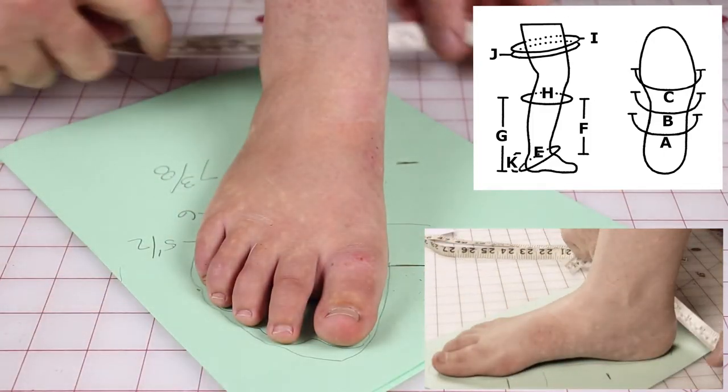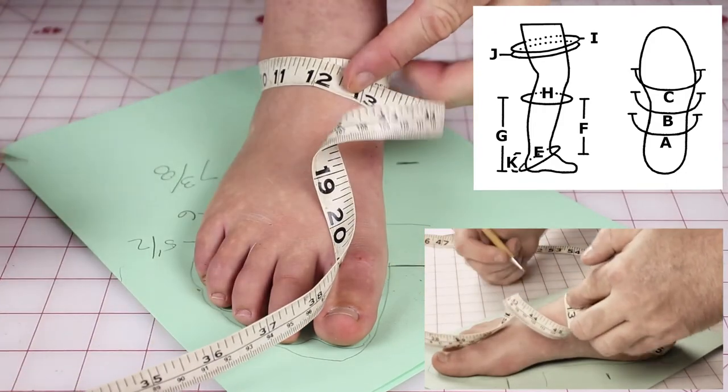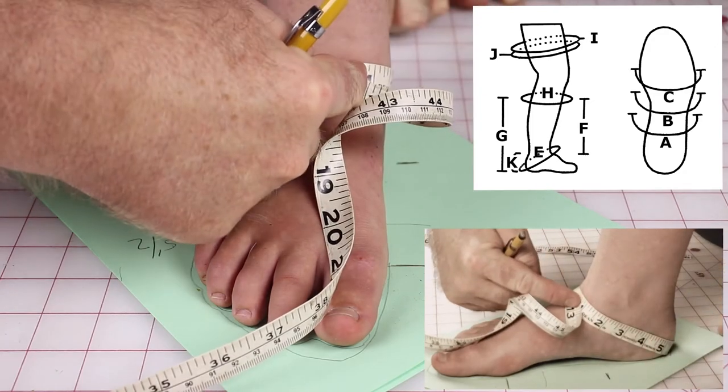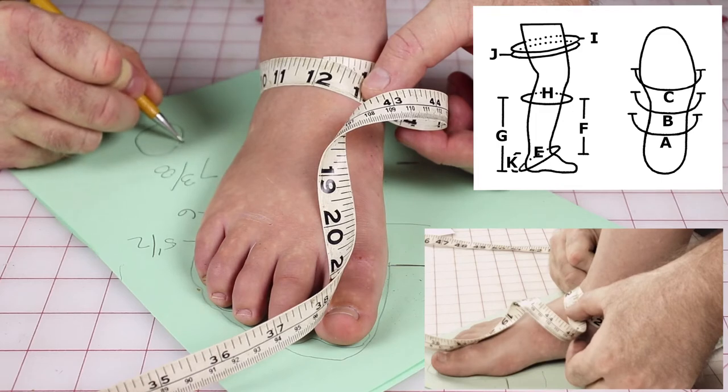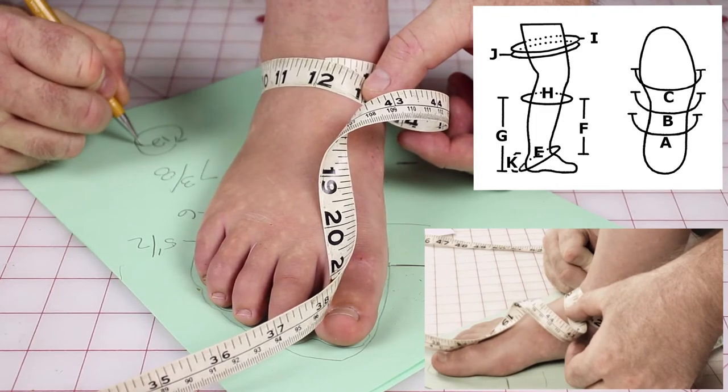The most important measurement to get correct is the E measurement, where I go from the bottom of the heel all the way around and back up to the top. And we can see that that measurement, and I make a little circle with an arrow, almost like an at sign, and I'll put 12 there.